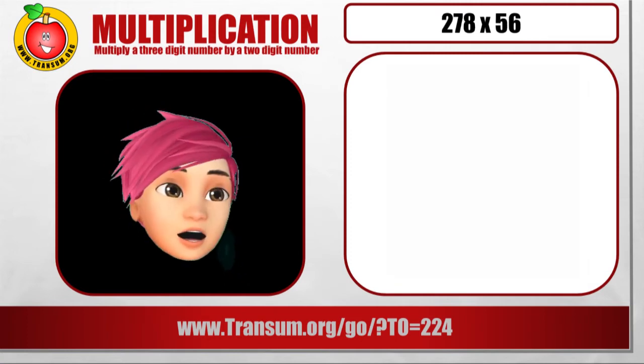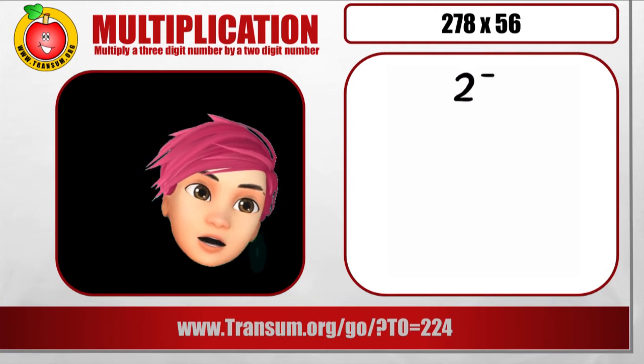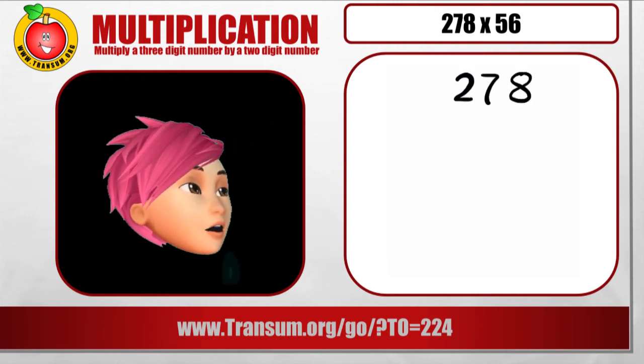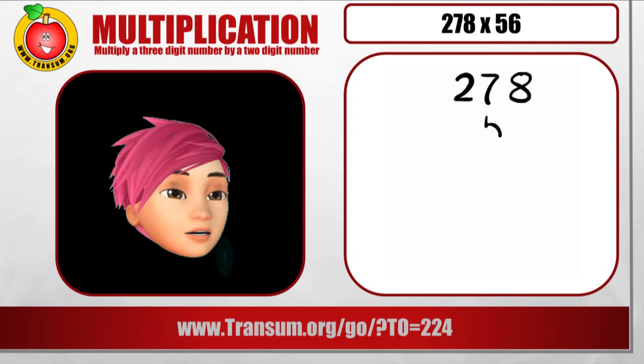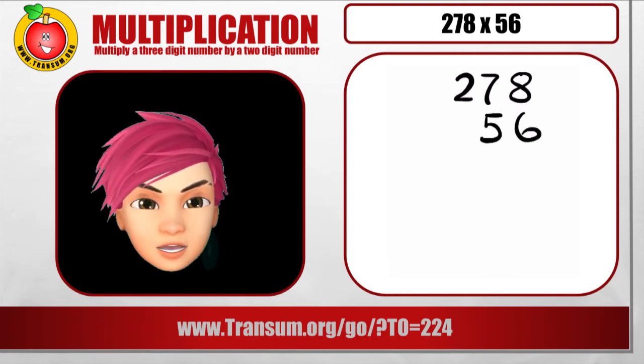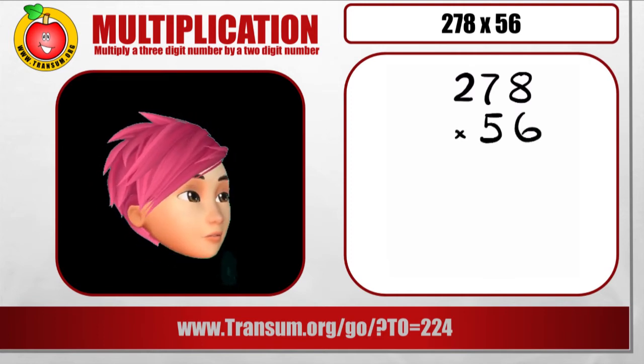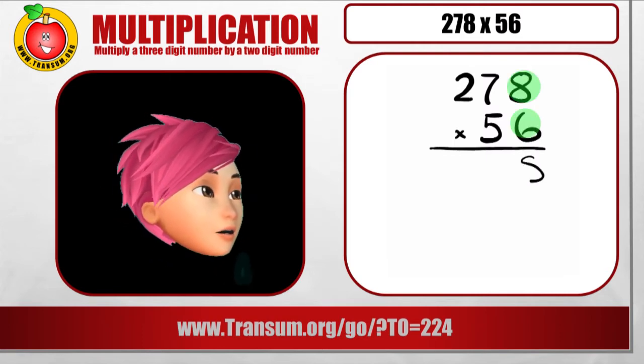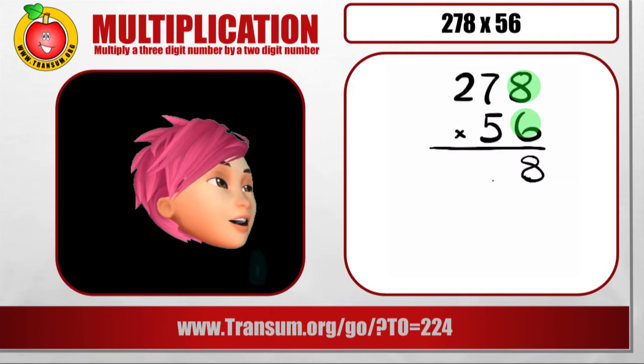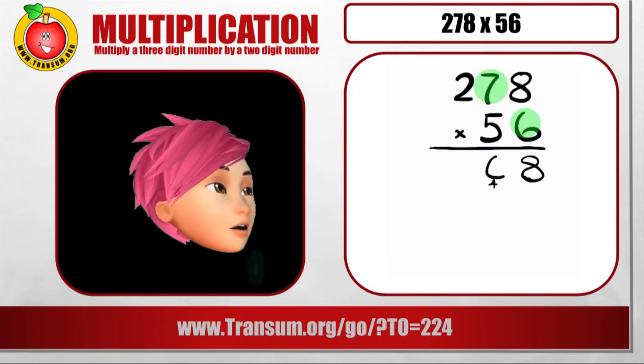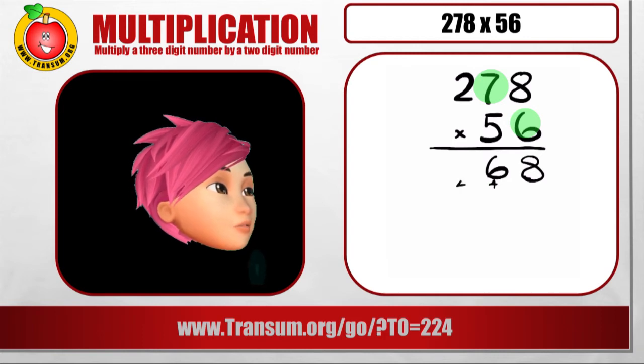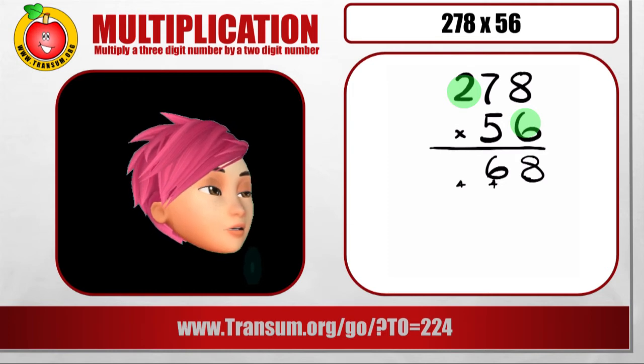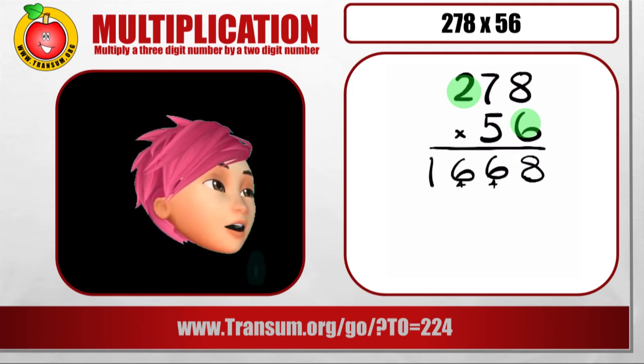Stick with us. 278 times 56. Here we go. Write down the 278 and then the 56 directly underneath. Put the multiplication sign in. Line underneath. Then multiply by the 6 first. 6 8's are 48. 4 is carried onto the next column. 6 7's are 42. Add on that 4. 46. And then 2 6's are 12. Add on that 4. And we get 16.